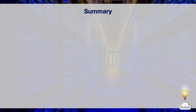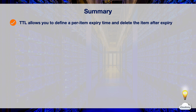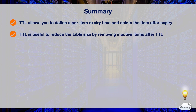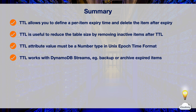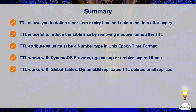In this episode, we've learned about the TTL attribute in DynamoDB. TTL allows you to define a per-item expiry time and delete the item after it has expired. TTL is a useful feature to reduce table size by removing inactive items after a certain time. The TTL attribute must be a number type in Unix Epoch Time format. TTL works with DynamoDB streams for backup or archiving, and also works with global tables — DynamoDB replicates TTL-triggered deletions to all replica tables.